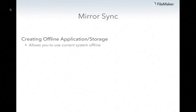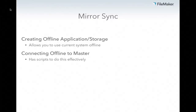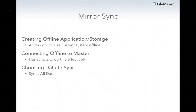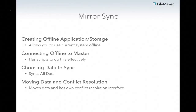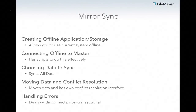Mirror Sync is not very flexible — it really only does a few things, but it does those few things really, really well. It takes care of your offline application, lets you use your current system and just brings it offline, allows you to connect offline to master easily, syncs all of the data — you have some control over what data to sync but by default it syncs all data — and deals with conflict resolution or gives you an interface to handle it yourself.